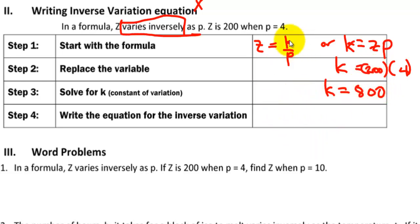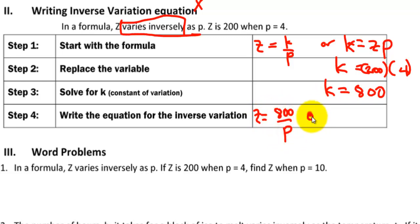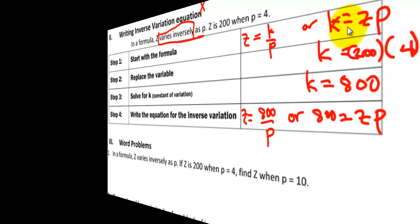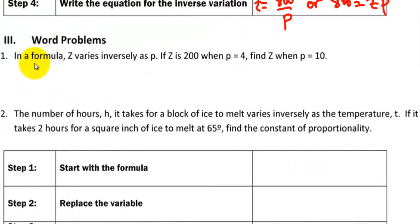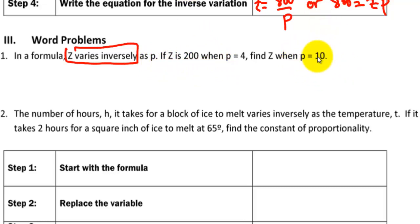Then we go back to the formula and replace the value of K. So the equation is Z equals 800 divided by P, or 800 equals Z times P. Now, Z varies inversely as P. If Z is 200 when P equals 4, find Z when P is equal to 10. Again, write your equation first: K equals Z times P, so K equals 800.